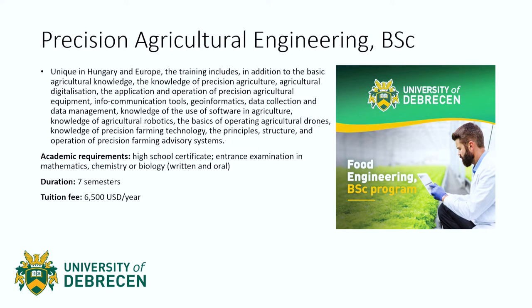The next program is precision agricultural engineering — a program unique in Hungary and Europe. The training includes, in addition to basic agricultural knowledge, the knowledge of precision agriculture, agricultural digitalization, and the application and operation of precision agricultural equipment. It also covers info-communication tools, geo-informatics, data collection and data management, the use of software in agriculture, agricultural robotics, the basics of operating agricultural drones, precision farming technology, and the principles, structure, and operation of precision farming advisory systems.